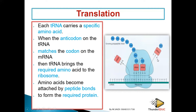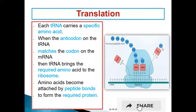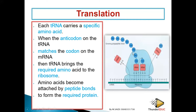When they match, the transfer RNA brings the required amino acid to the ribosome. It keeps on bringing amino acids, and they are joined together by peptide bonds to form the required protein. This forms a polypeptide chain — once it grows to more than 50 amino acids, we call it a protein. If they ask you what this is, it is called a polypeptide chain.